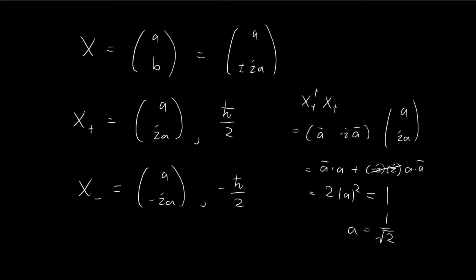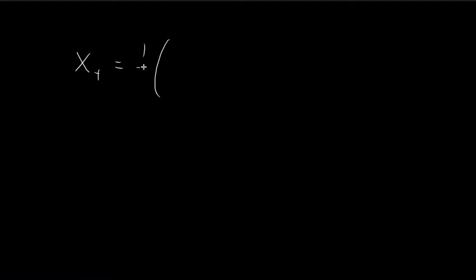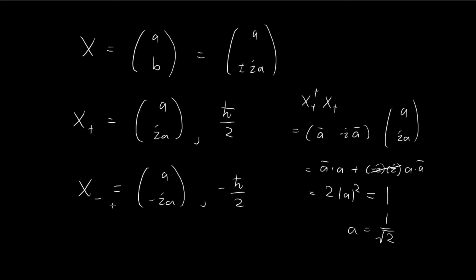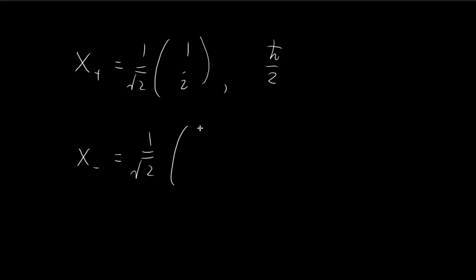This gives us the eigenvectors. For the spin-up eigenvector (eigenvalue ℏ/2), we have (1/√2)(1, i). For the spin-down case, the only difference is a negative sign on the i component, and going through the same normalization argument gives A = 1/√2 again. So the spin-down eigenvector is (1/√2)(1, −i), with associated eigenvalue −ℏ/2. This is how you find the eigenvectors and eigenvalues for Sy.